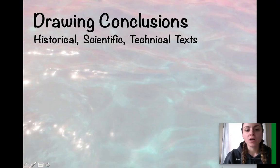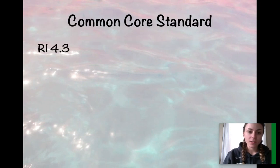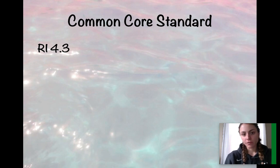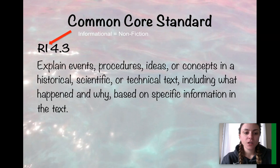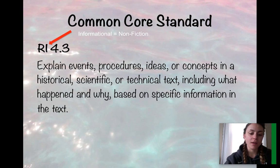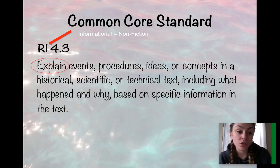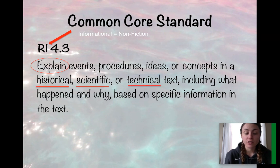Today we're going to be talking about drawing conclusions within historical, scientific, and technical texts. The Common Core standard that this aligns with is RI 4.3. RI stands for reading informational texts, so we're going to be focused on those informational and nonfiction texts giving us true facts. The grade level is four and the standard is three. The standard reads: explain events, procedures, ideas, or concepts in a historical, scientific, or technical text, including what happened and why, based on specific information in the text. We need to be able to retell what we read in a descriptive way across those three types of informational texts.